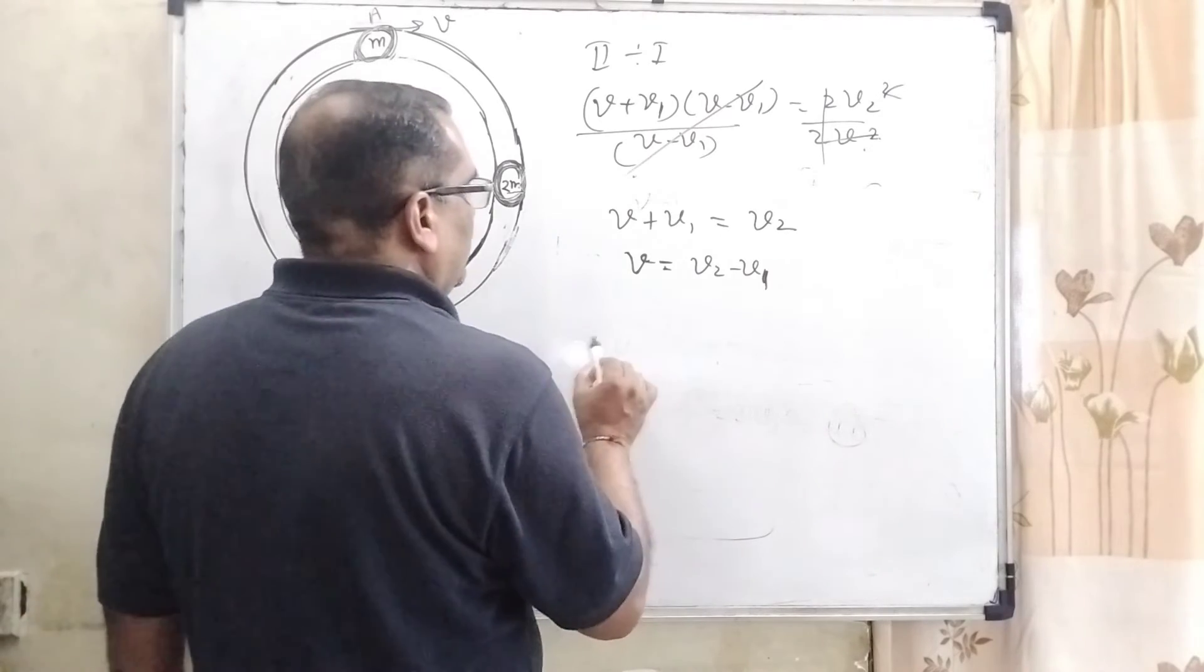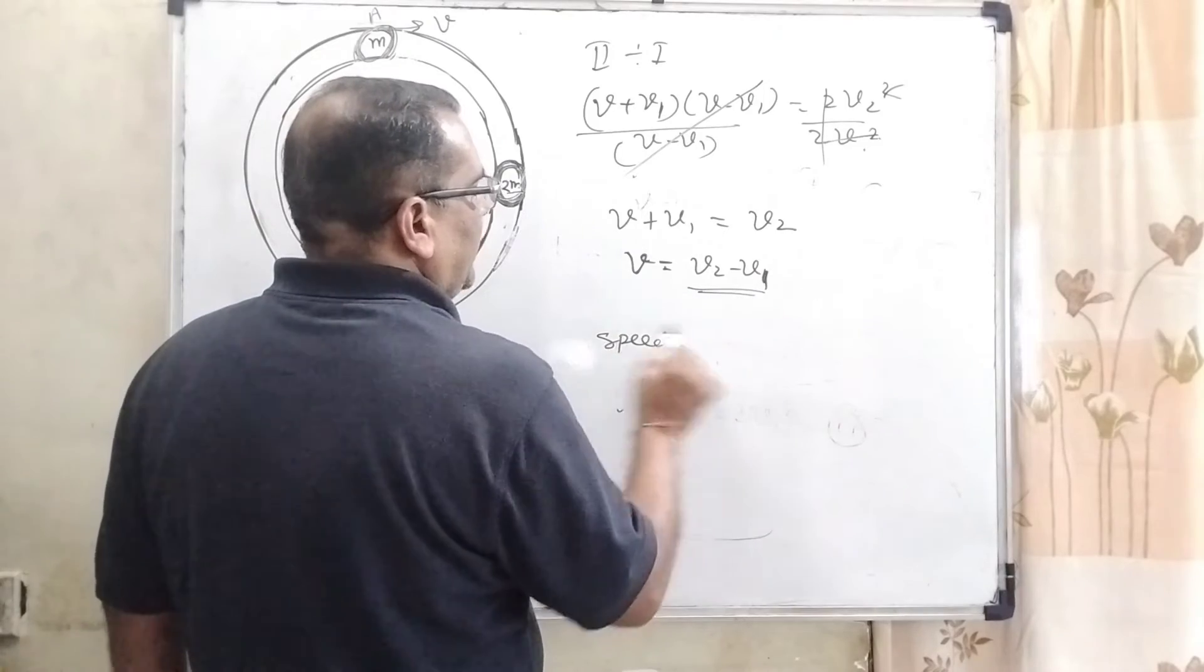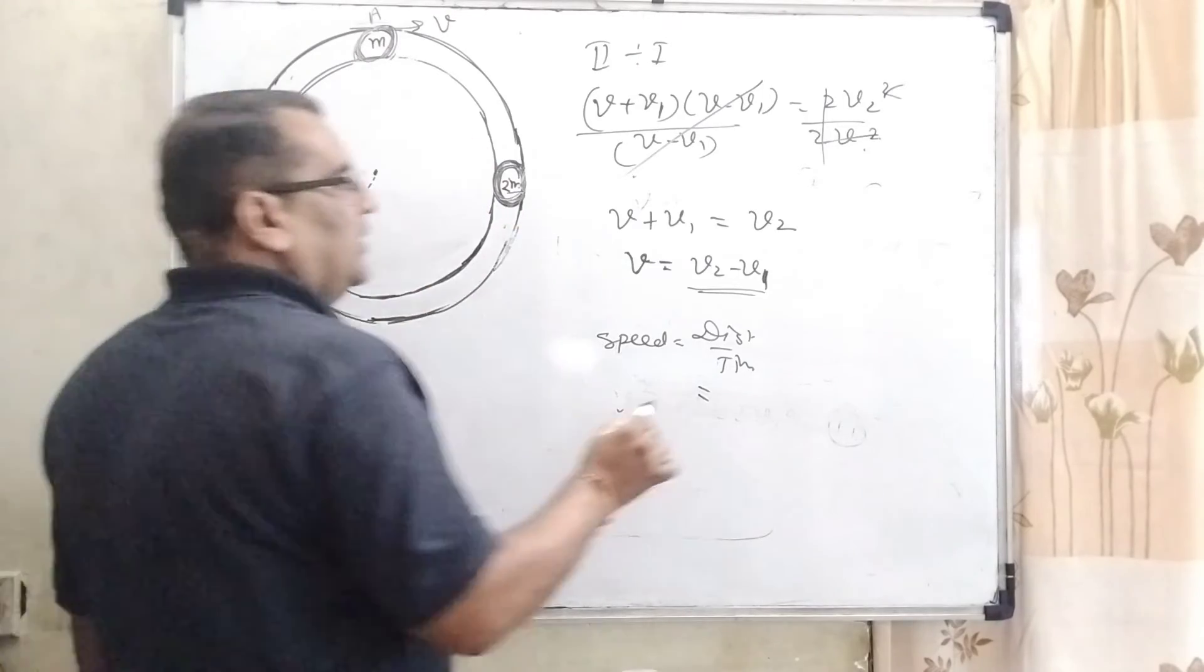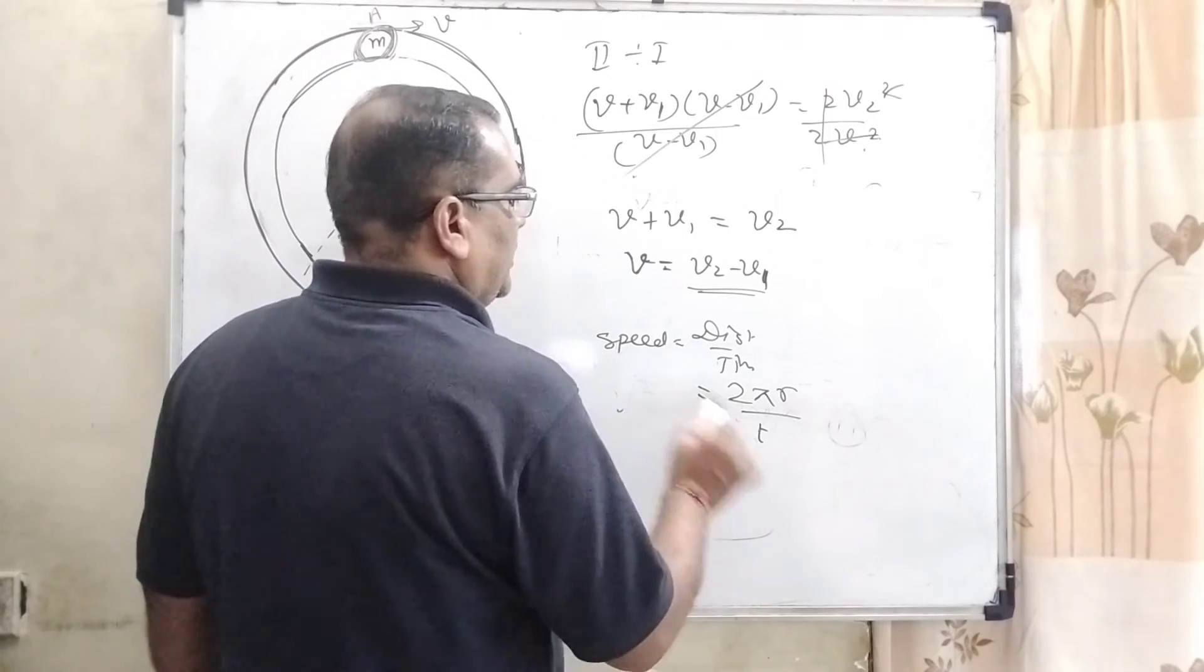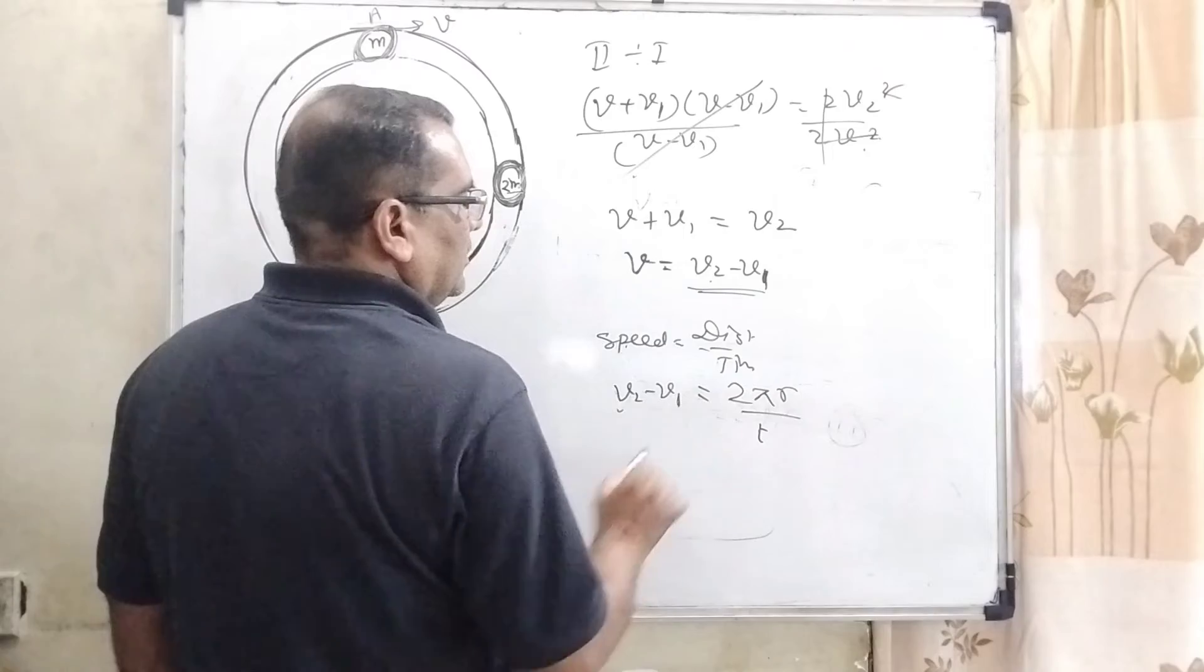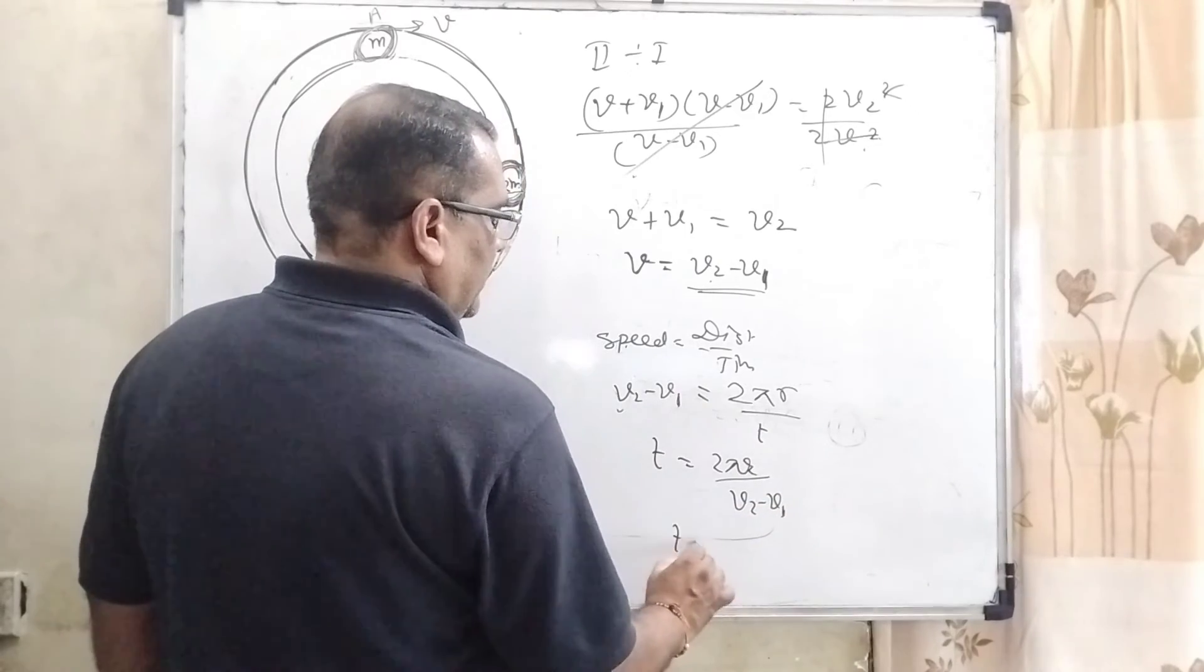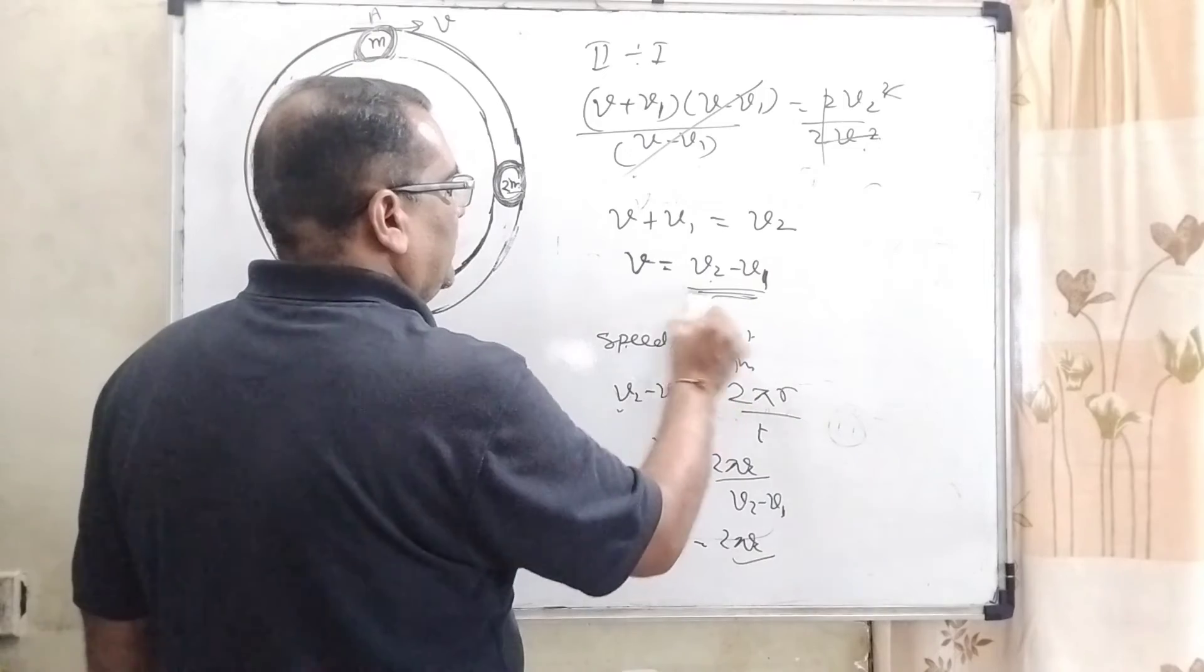And now as we know that speed equals distance upon time. So what is the distance when it is stable? For second collision, the total distance taken is 2πr. Here time is t and here the relative velocity is v2 - v1. So here t = 2πr/(v2 - v1). Then again v2 - v1. What is v2 - v1? That is v.